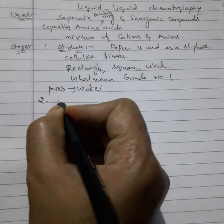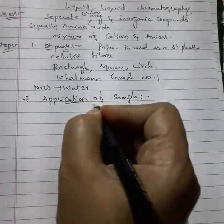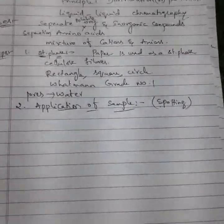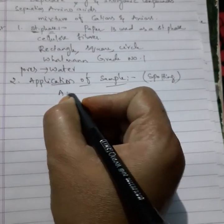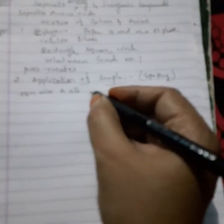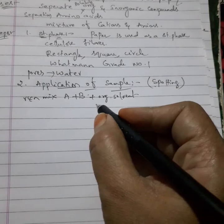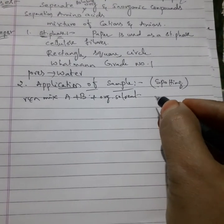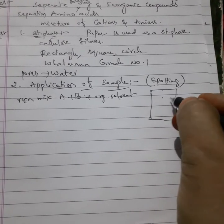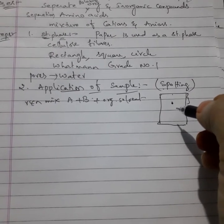The next step is application of sample, also called spotting. Generally the reaction mixture we want to separate - let us suppose the reaction mixture contains A and B - we add a little bit of organic solvent, and using a micro pipette place it as a spot on the paper. If my paper is of rectangle shape, at a distance of 3 to 4 centimeters from one end, just put it as a spot. This is application of sample.